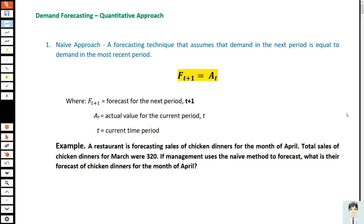Hello, we will discuss the quantitative approach for demand forecasting. The first quantitative approach is the naive method. It is a forecasting technique that assumes that demand in the next period is equal to the demand in the most recent period. Our formula is: the forecast for the next period (F_{t+1}) equals the actual value for the current period (A_t), where t is the current time period.